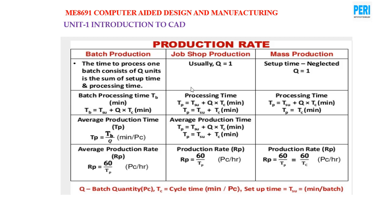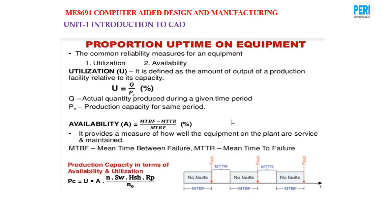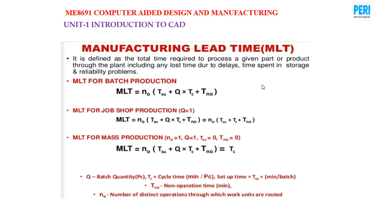Production rate applies to batch production, job shop production, and mass production. Proportion uptime, utilization: U equals Q divided by PC, where Q is actual quantity produced and PC is production capacity for the same period. Availability equals (MTBF minus MTTR) divided by MTBF, where MTBF is mean time between failure and MTTR is mean time to repair. Manufacturing lead time: MLT equals N0 · (Tsu + Q · Tc + Tn0). For job production Q equals 1; for mass production N0 equals 1, Q equals 1, Tsu equals 0, and Tn0 equals 0.